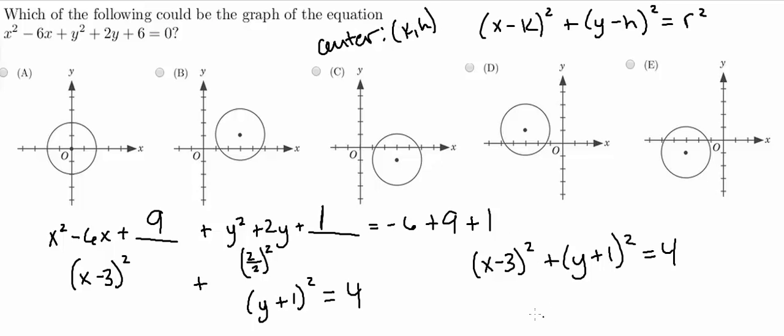So the only thing you need to remember is to flip these signs because this is already minus k and minus h. So the center is going to be 3 comma negative 1.